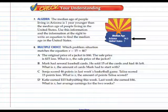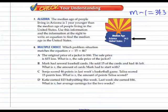The median age of people living in Arizona is one year younger than the median age of people living in the United States. Use this information to write an equation to find the median age in the United States. The median age in the United States represented by m is one more than the median age in Arizona. If the median age in Arizona is 34.3, then m minus 1 equals 34.3.